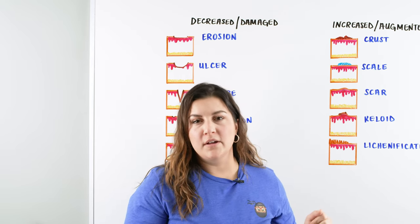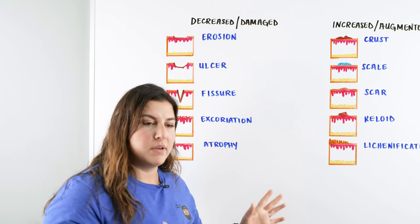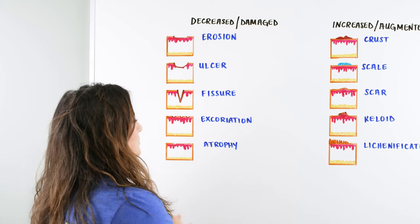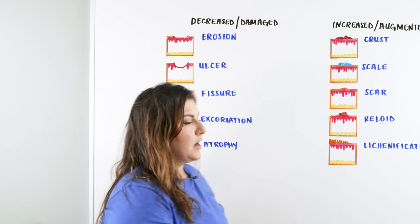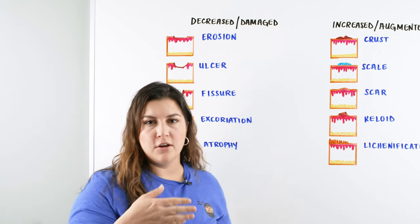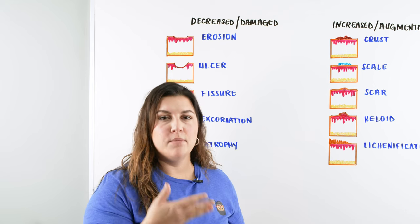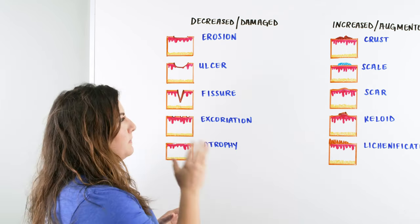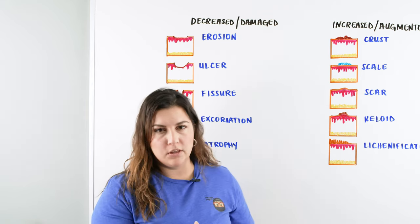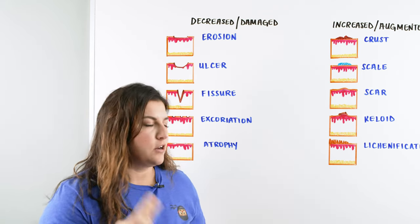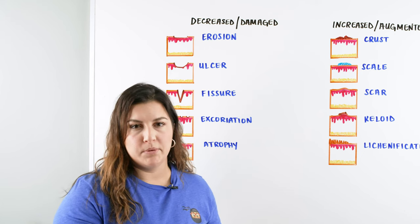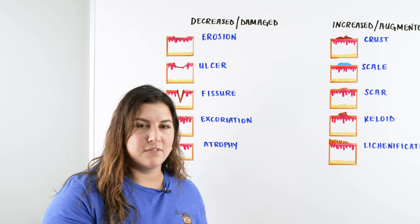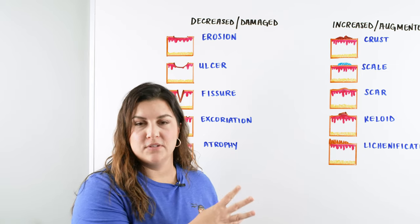I always think of secondary lesions as more a characteristic of the primary lesion because that's really what they are. We're talking about changes that are occurring with our primary. Any of these — there are 10 depicted here — can be a combination in our lesions and they can also change. These can occur from either the natural healing process, infection, or any type of manipulation like scratching, itching, or picking. Because of that, these are the secondary characteristics that can occur.